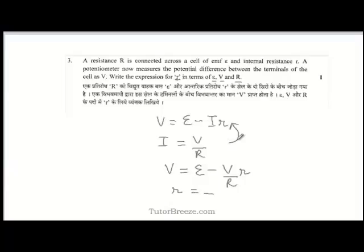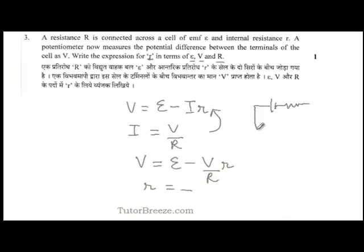Now, let's just take a look at this step once again. You have a cell of EMF E and internal resistance small r connected to an external resistance capital R. This is small r, this is capital R and this is the EMF E.